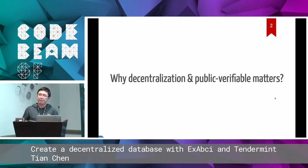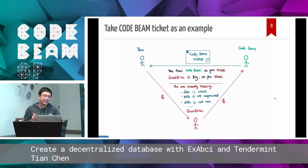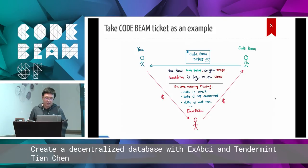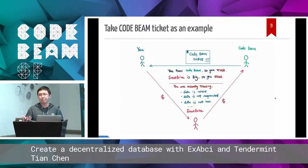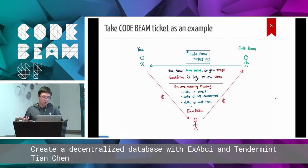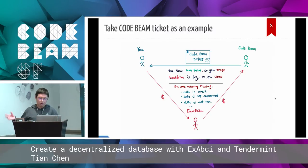We have all kinds of internet applications. They work pretty well. Why do we need to break them down and rebuild things again? Take the CodeBeam ticket as an example. Everyone bought a CodeBeam ticket from Eventbrite, or got a free ticket. We trust CodeBeam because we know CodeBeam, we previously had good experience with them. We trust Eventbrite because it's a big company — we know it probably won't do evil, so we give our money to it.